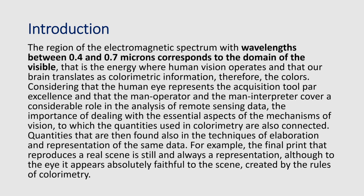The introduction starts by stating that in the region of the electromagnetic spectrum comprised between wavelengths ranging from 0.4 to 0.7 microns, corresponding to the domain of the visible, is the energy where human vision operates and that our brain translates as colorimetric information — therefore the colors. Considering that the human eye represents the acquisition tool par excellence, and that the human operator is the main interpreter in the analysis of remote sensing data, understanding the essential aspects of the mechanisms of vision is very important.